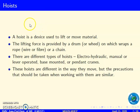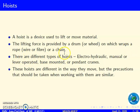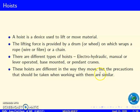Now we will see what is a hoist. A hoist is a device used to lift or move material. The lifting force is provided by a drum or wheel on which wraps a rope or a chain. There are different types of hoists: electro-hydraulic, manual or lever operated, and base mounted or pendant cranes. These hoists are different in the way they move.